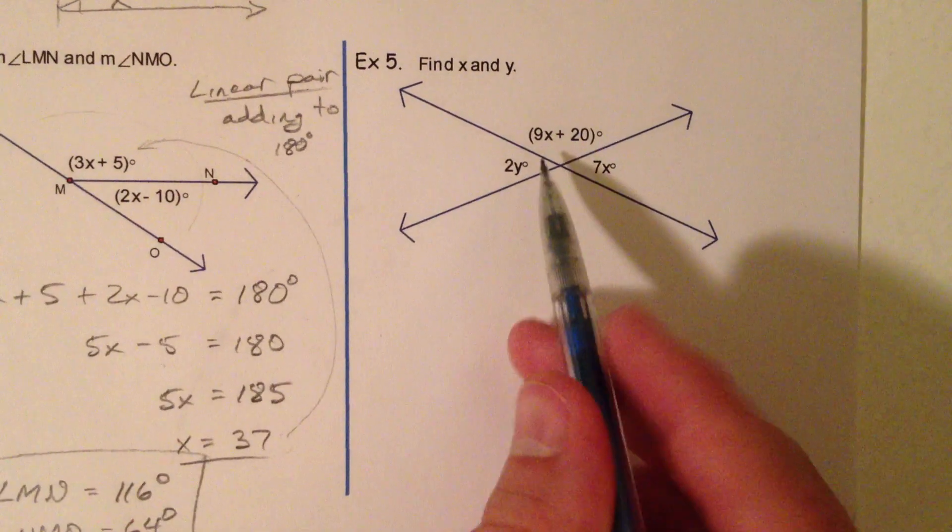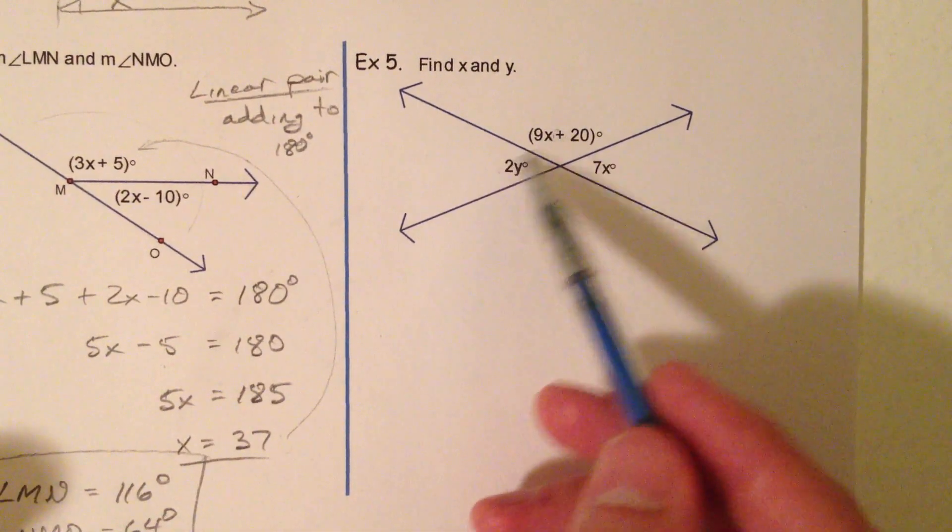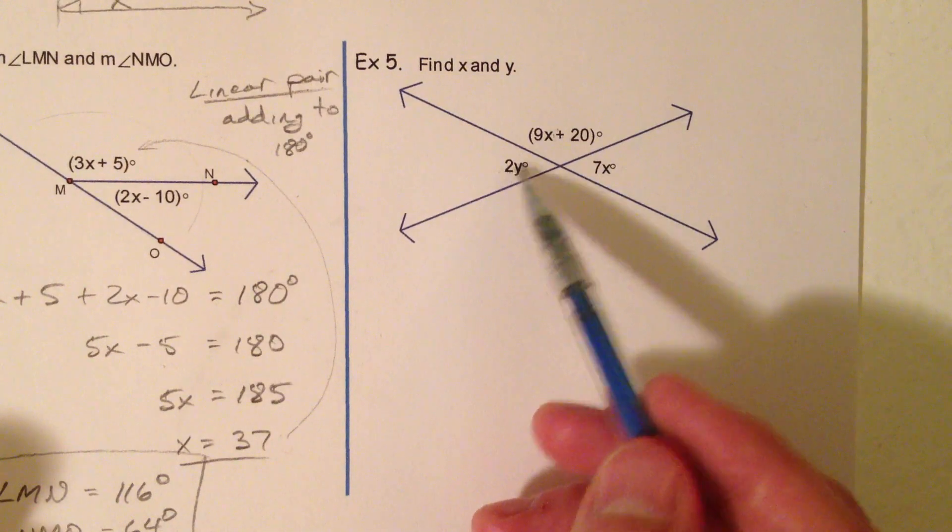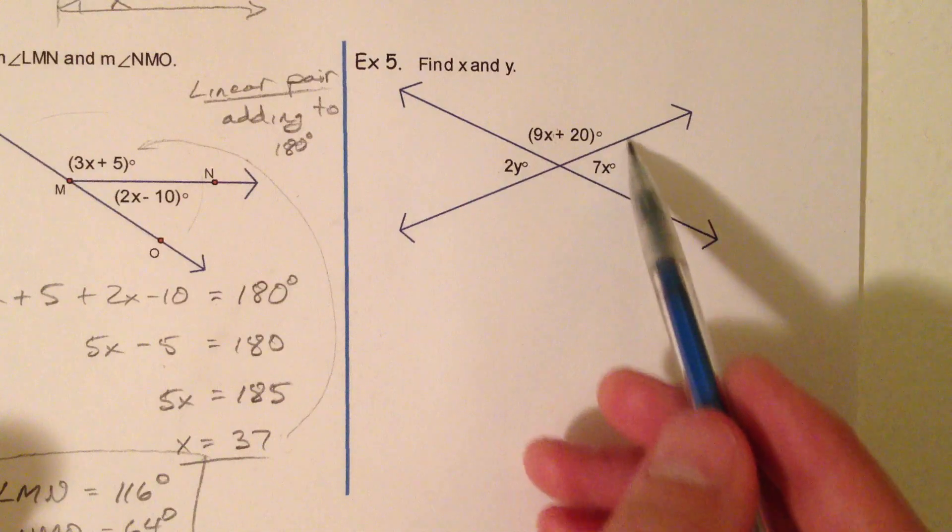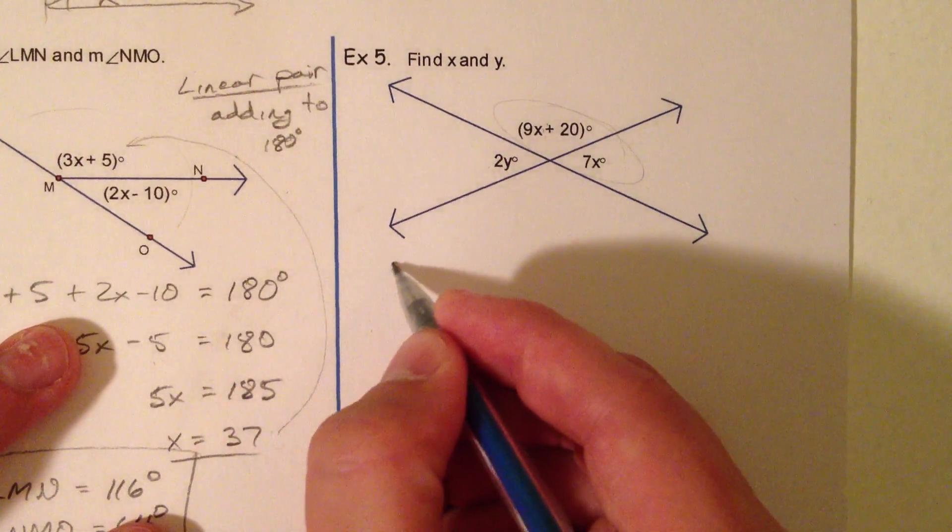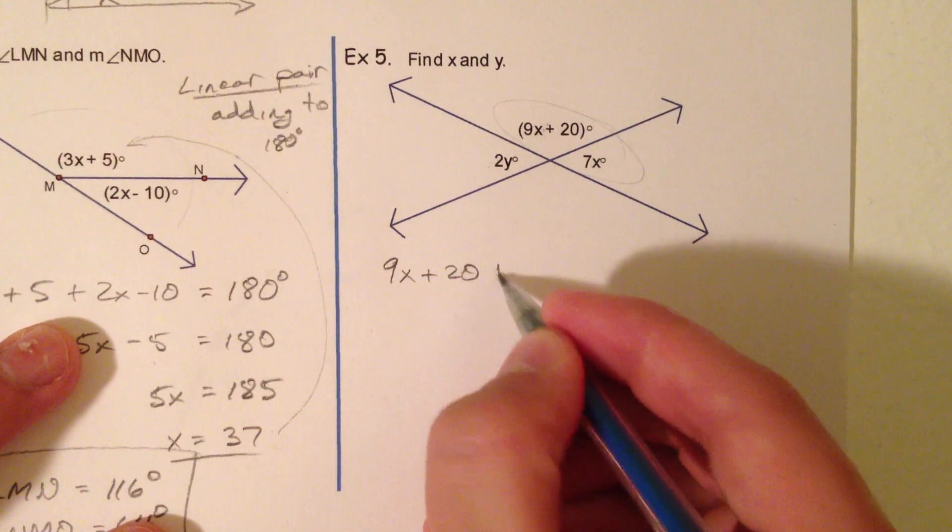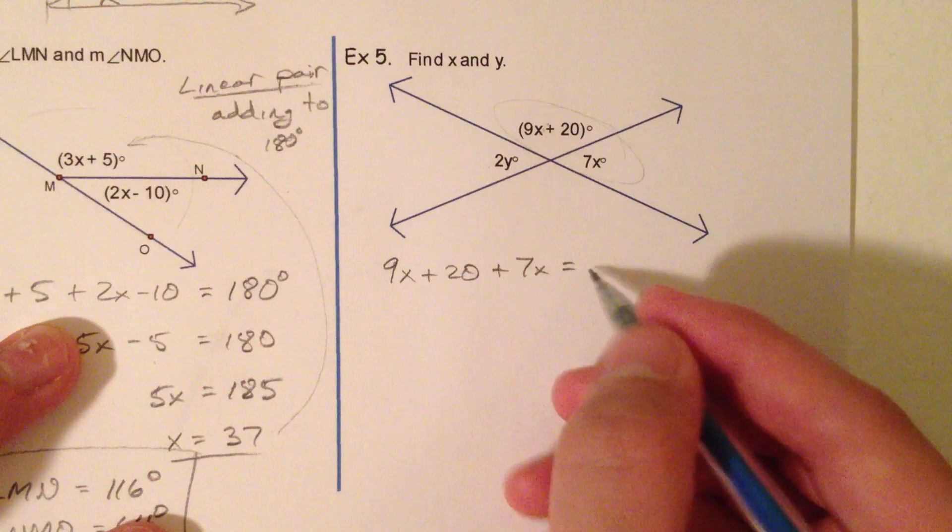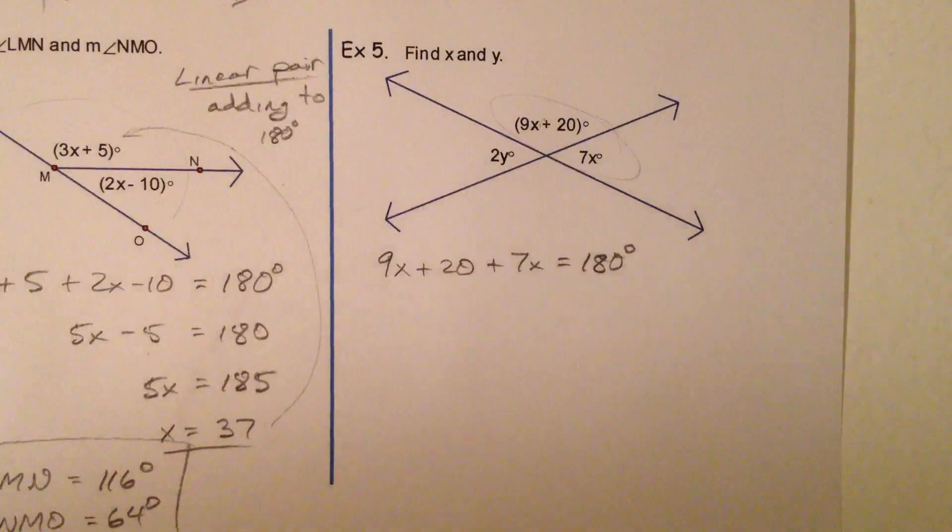Now we want to find just X and Y. So, these two are a linear pair, but one's got an X, one has a Y. These two are a linear pair and both of those have X's. So I'm going to start right there. What if we said that 9X plus 20 plus 7X was equal to 180 degrees? Notice a pattern here. We're either adding to 90 or adding to 180 or we're going to set them equal to each other.